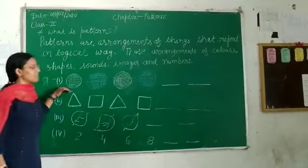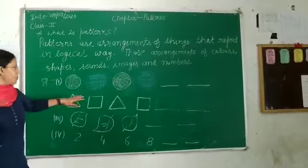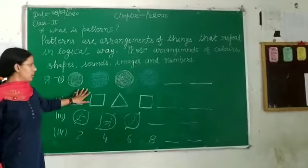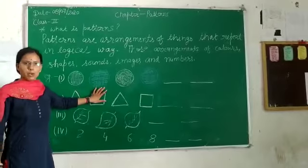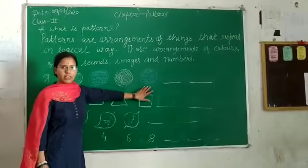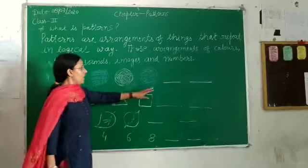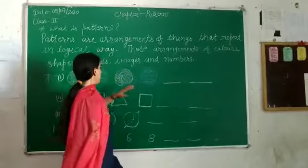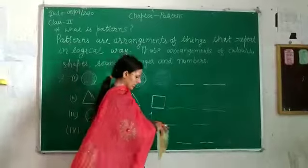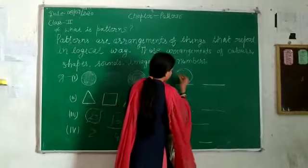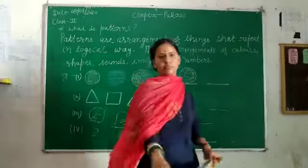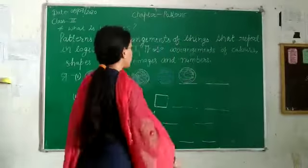Now some examples of pattern are here. It is a circle — white circle, then blue circle, then white circle, then blue circle. What comes next? White circle. What happens once a circle comes? White. Next, what comes next?